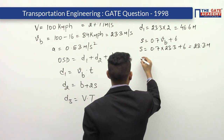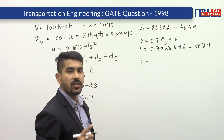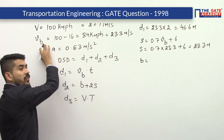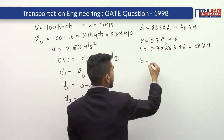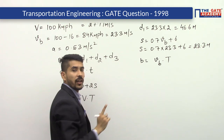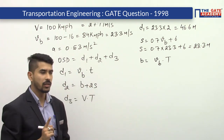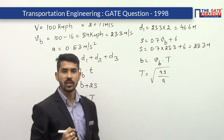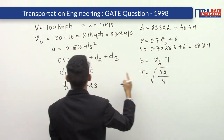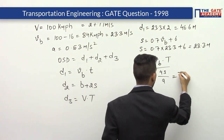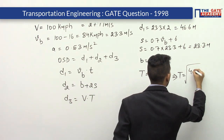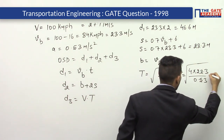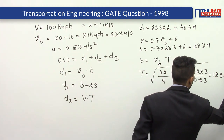b is the distance traveled by the overtaken vehicle during the overtaking operation, given by vb into capital T. Since we don't have capital T, we first calculate it. Capital T equals the square root of 4s divided by a. Substituting s equal to 22.3 and a equal to 0.53, T equals the square root of 4 into 22.3 divided by 0.53, which comes out to be 12.9 seconds.